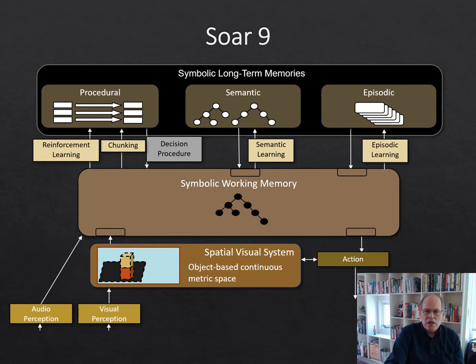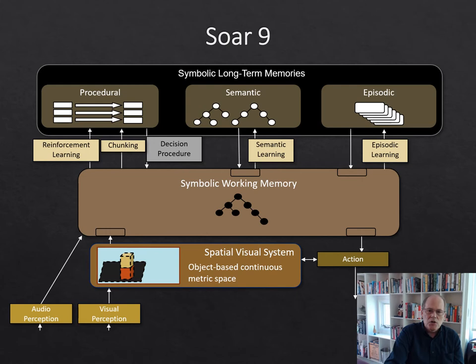This is the basic structure of the current version of SOAR, SOAR 9, which added new memories and learning mechanisms. Central to the system is the symbolic working memory that holds the system's current goals and the current state of the world. Feeding into that, we have information coming in from perception — an important component of which is the spatial visual system. This takes vision in and creates a scene graph representation that is both object-based and spatially based with metric information, from which we can extract relations such as on top of, next to, and to the right of as symbolic representations the system can reason over.